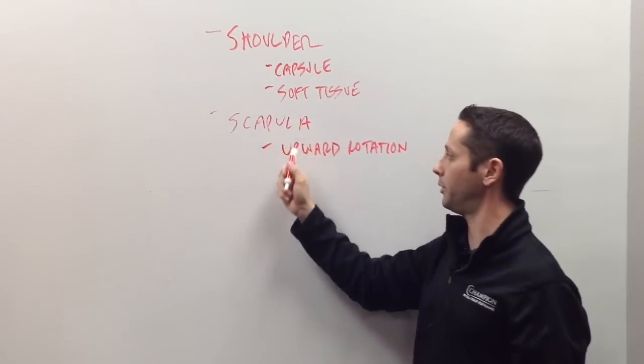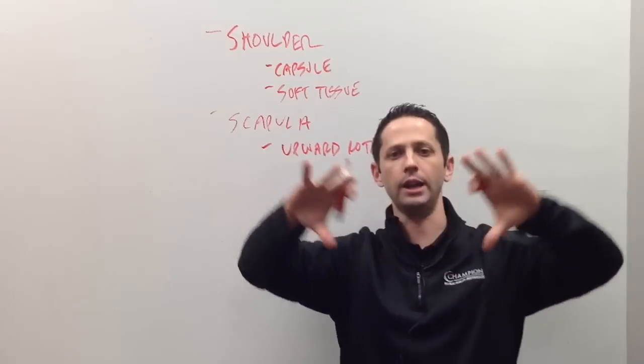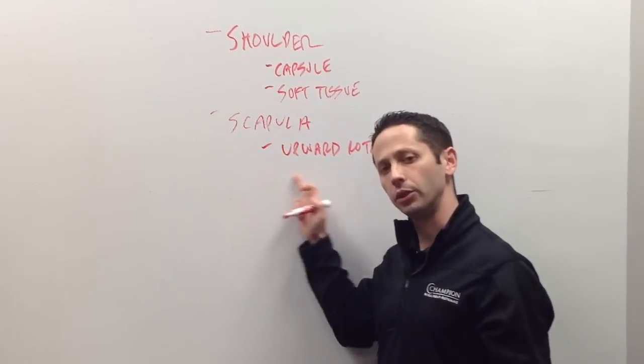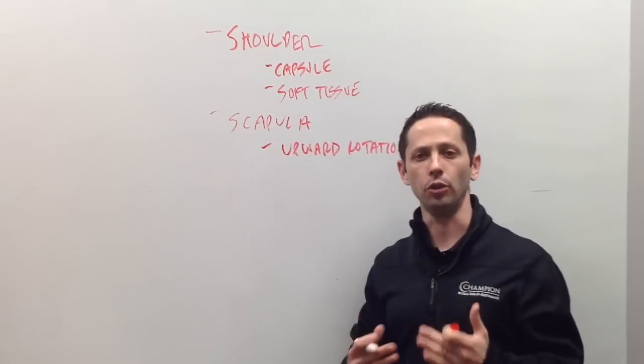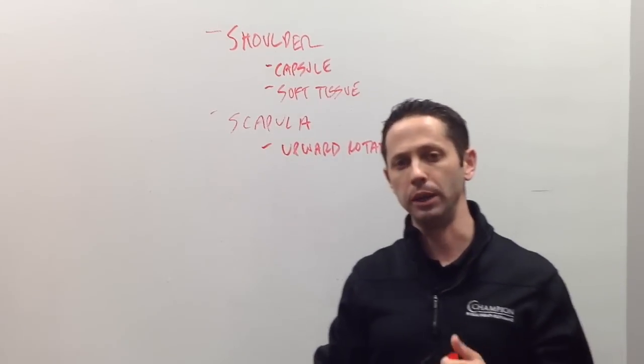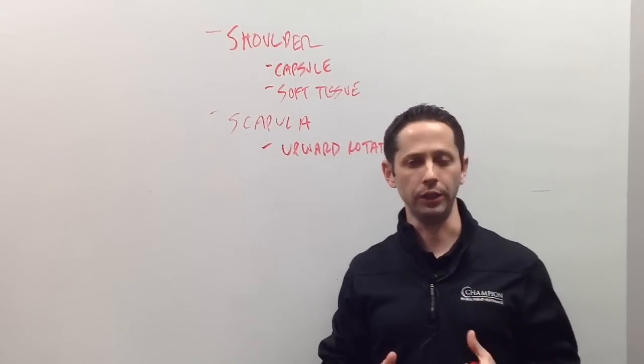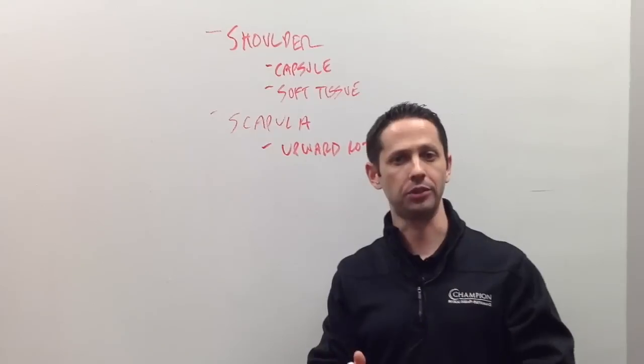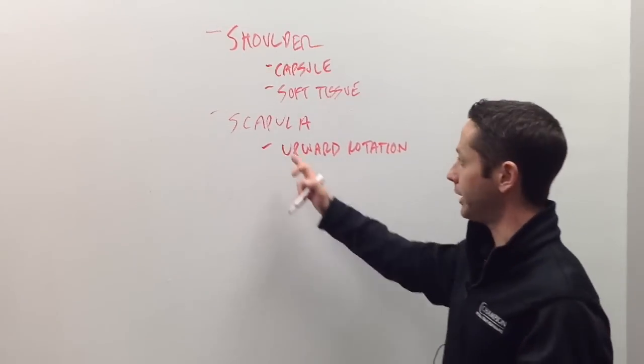The next thing we look at with the scapula is upward rotation. It doesn't have the ability for the scaps to glide upward like it normally should. And that's usually not something that's restricted from soft tissue tightness as much as it's usually a motor control issue or an imbalance that we see. Sometimes you can just see an imbalance where maybe the upper trapezius or some other muscle group is kind of overpowering the muscles that are responsible for upward rotation, which tends to be the lower trap and the serratus anterior.